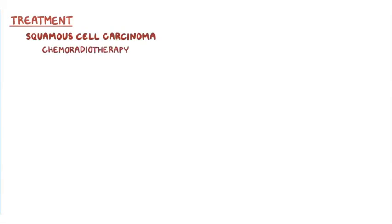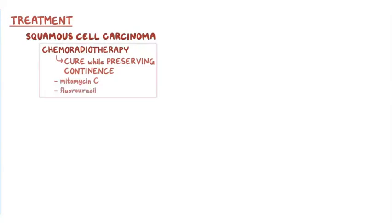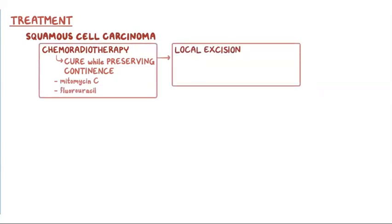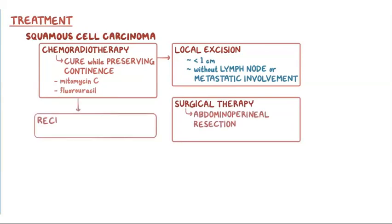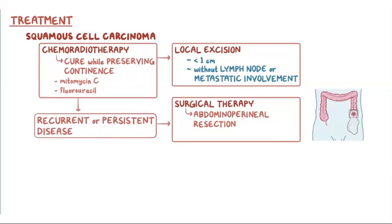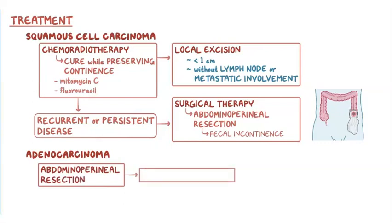Treatment for anal cancer from squamous cell carcinoma includes combined chemoradiotherapy rather than surgery, because it can cure many individuals while preserving continence. The most common chemotherapy regimen is a combination of mitomycin C and fluorouracil. Local excision is an option for tumors smaller than 1 cm and without lymph node or metastatic involvement. Otherwise, surgical therapy with abdominoperineal resection is reserved for individuals who have recurrent or persistent disease after chemoradiotherapy. That's where the anal rectum is removed along with both the internal and external anal sphincters, leading to fecal incontinence and requiring a permanent colostomy.